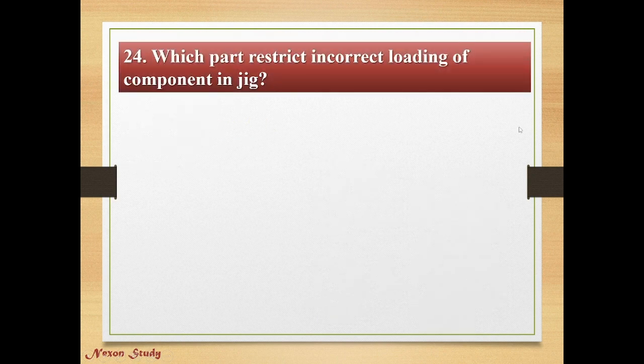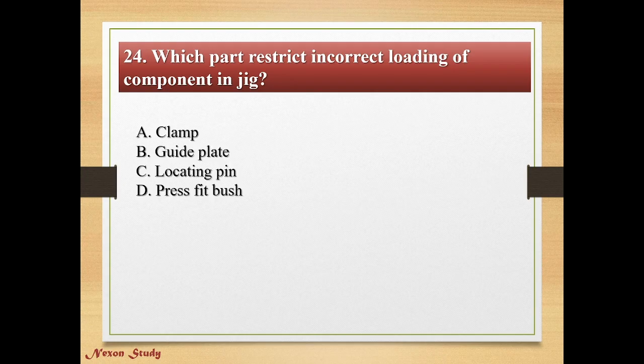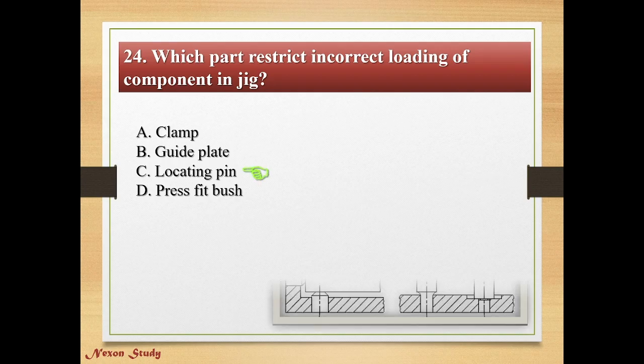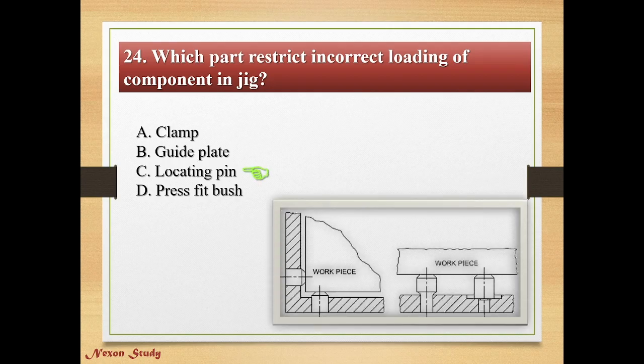Question: Which part restricts incorrect loading of a component in a jig? Options: clamp, guide plate, locating pin, press fit bush. Correct answer is locating pin. This is the locating pin.